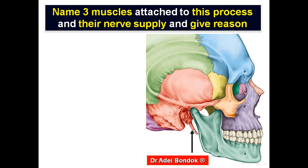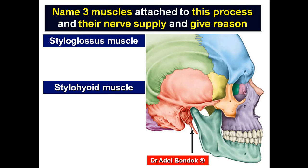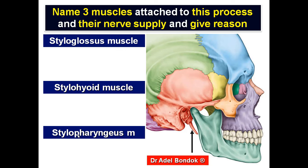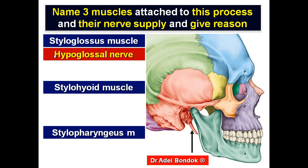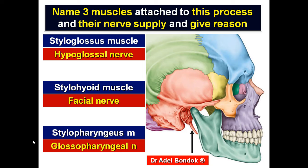This is the styloid process. Three muscles are attached to the styloid process: styloglossus, stylohyoid, and stylopharyngeus. The styloglossus is supplied by the hypoglossal nerve, the stylohyoid is supplied by the facial nerve, and the stylopharyngeus is supplied by the glossopharyngeal nerve.